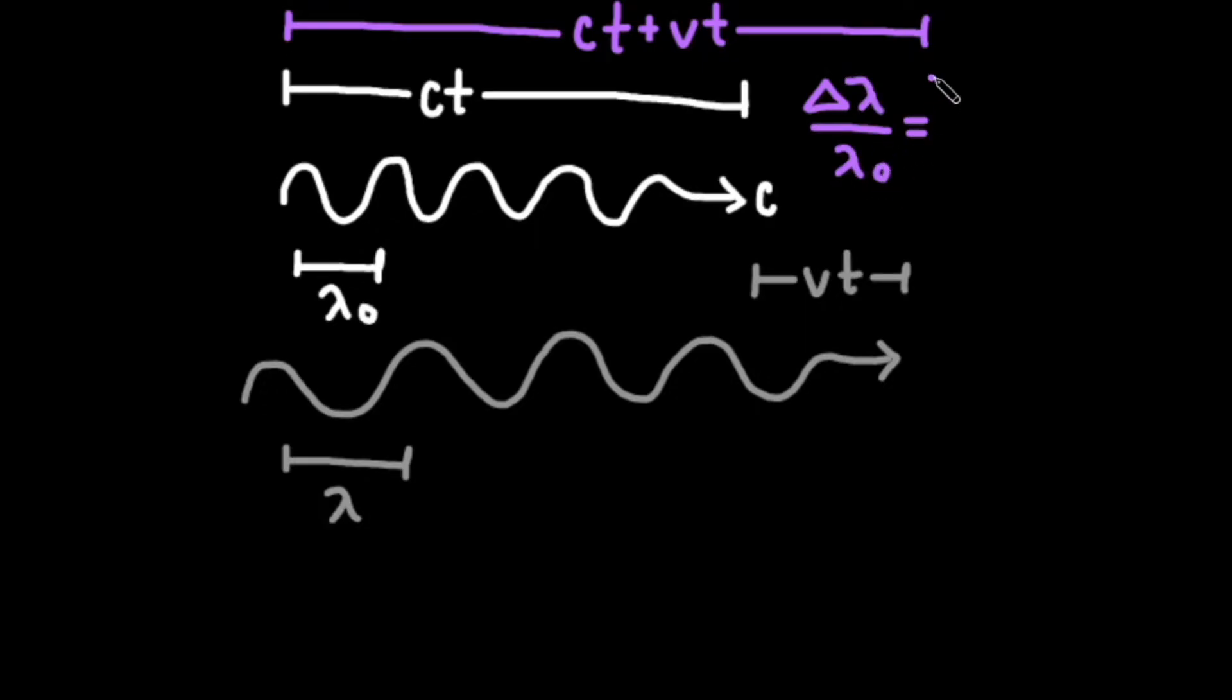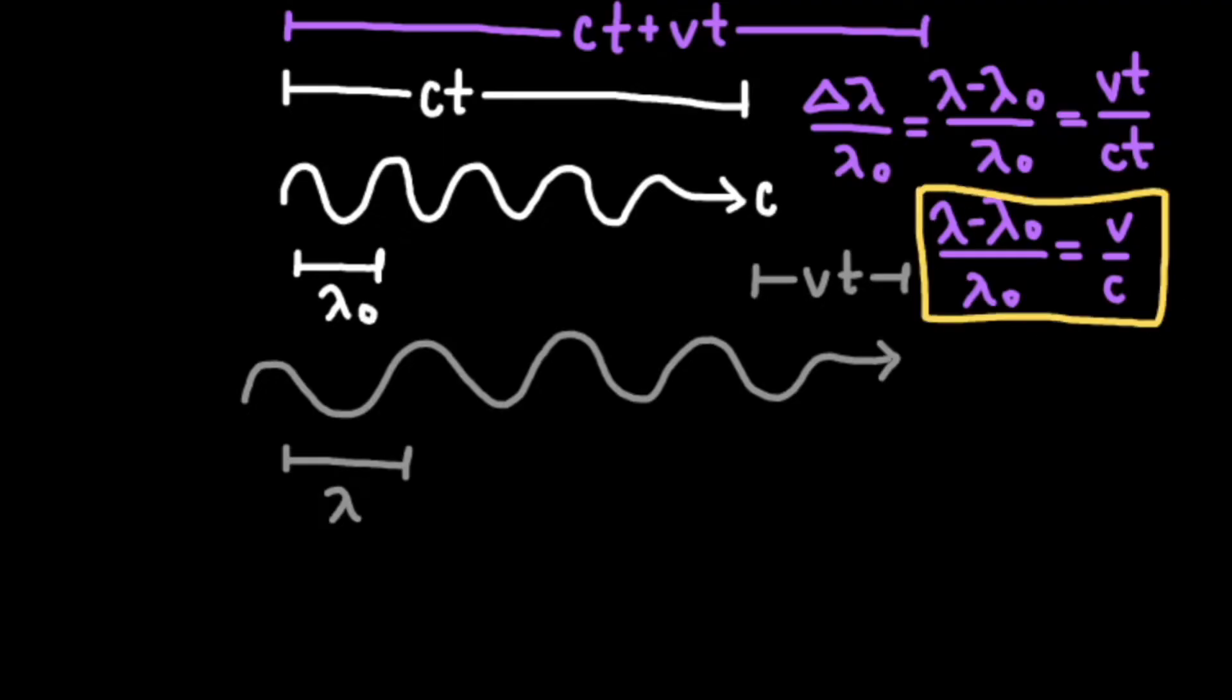Now, we can say that the change in the wavelength, that is, lambda minus lambda naught (λ - λ₀), compared to our initial wavelength is equal to vt over ct. And of course, we can simplify this by crossing out the t's. I would strongly recommend writing down this equation for when you need to use the Doppler effect. I'd also suggest seeing if you can derive the equation on your own, or re-watching the last 15 to 30 seconds of this video if you get stuck.